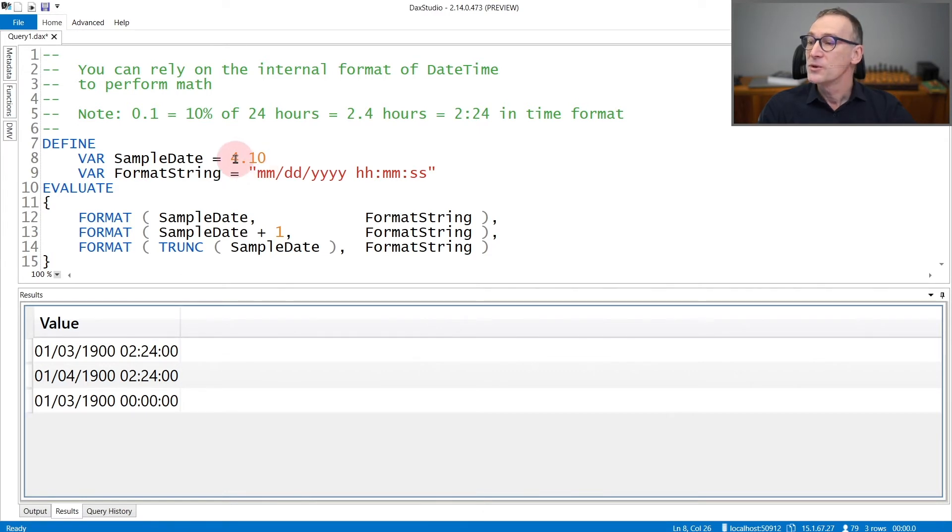Now, 4.10 contains the integer part 4, that is four days after December 30th. This turns out to be the 3rd of January, 1900. The fraction of the day is .10.